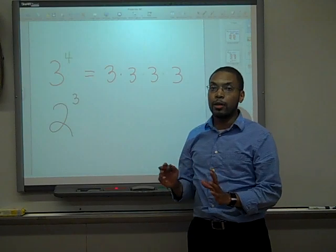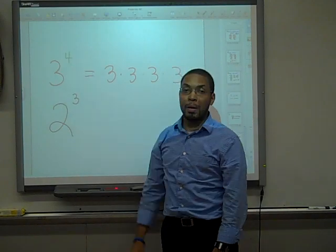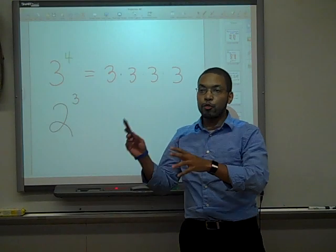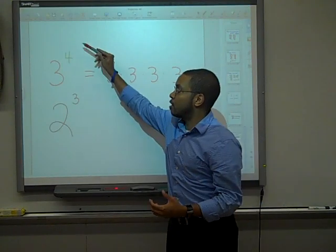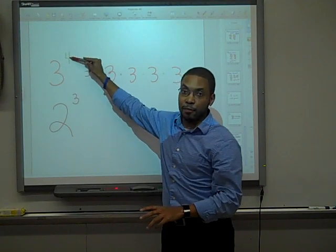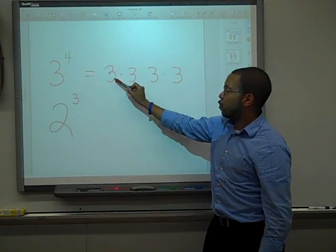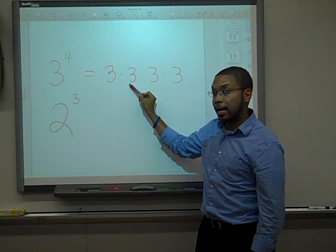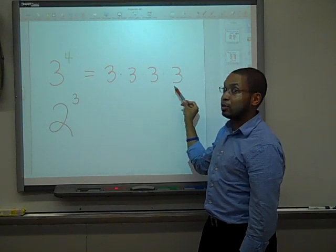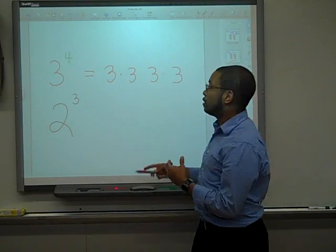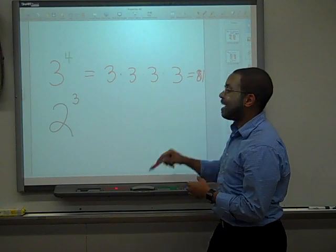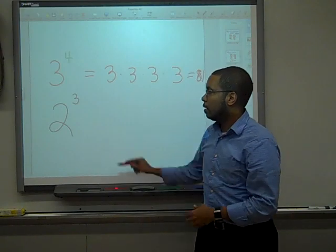Now, the most common error is to think that 3 to the 4th power equals 12. They're not bases. It's not 3 times 4. It's writing 3 as a factor, as a base, 4 different times. So 3 times 3 is 9, times 3 is 27, times 3 is 81. So the final product of 3 to the 4th power equals 81 and not 12.